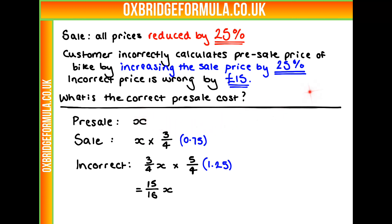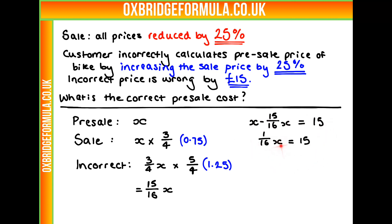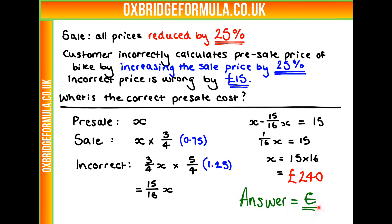What information from the question helps us calculate X? Well, we know the incorrect price was wrong by £15. So the difference between X and 15/16 X equals 15. Now we have an equation we can solve. We know that one sixteenth X is £15, so X must be 15 times 16, which is £240. So our final answer is answer E.